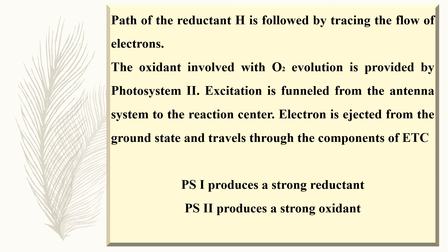Electron is ejected from the ground state and it travels through the components of electron transport chain. When the electron is ejected from the ground state to the higher energy level, an electron hole is created in PS2. The electron hole thus created in PS2 is filled by electron from tyrosine which gets electron from water via the manganese ions.